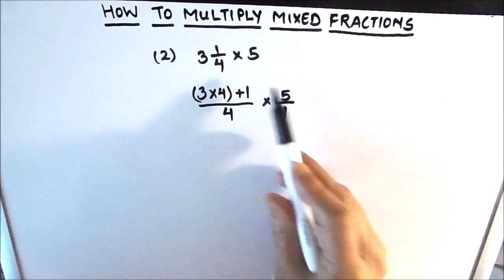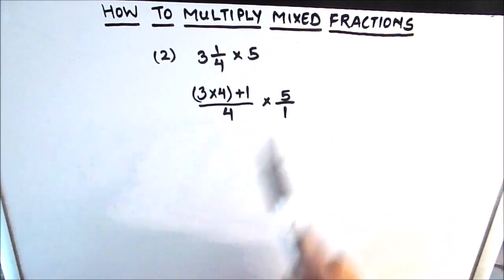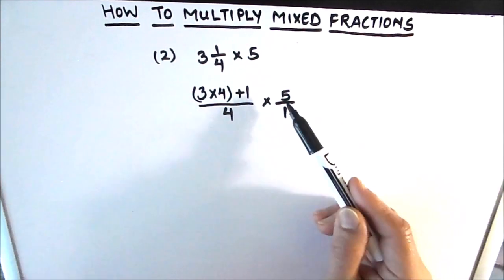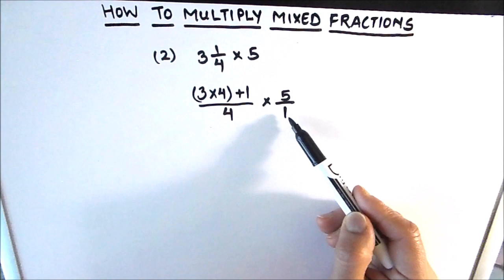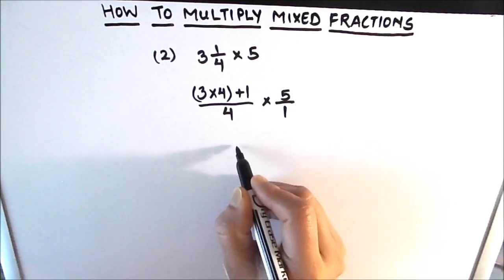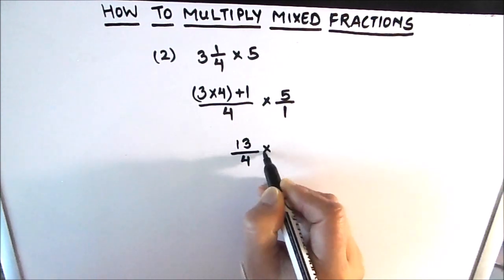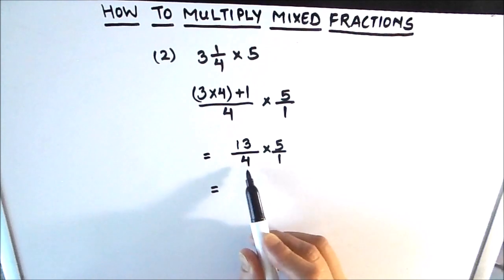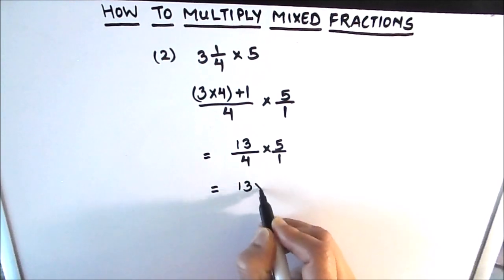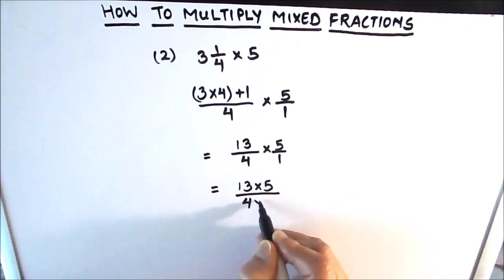This whole number 5 can be written as 5 upon 1 in fraction form. As we are multiplying with a fraction, we write the whole number as a fraction so we are not confused about whether 5 goes in the numerator or denominator — 5 is a whole number so it will be in the numerator and the denominator will be 1. So 3 times 4 is 12, 12 plus 1 is 13 — that's 13 divided by 4, times 5 divided by 1. We now have two improper fractions.